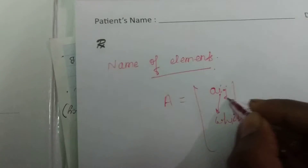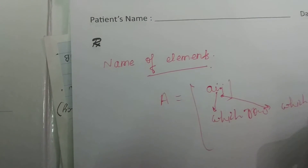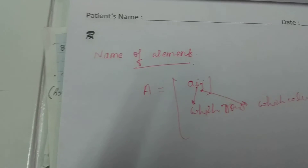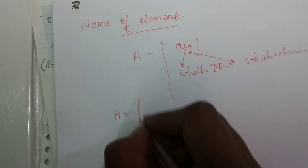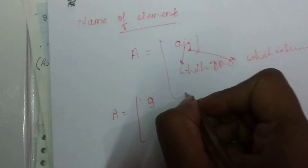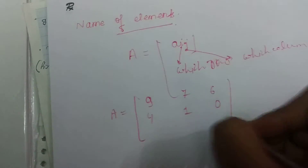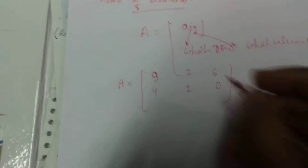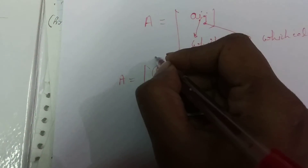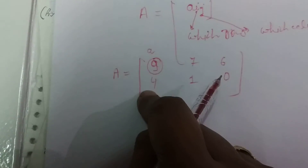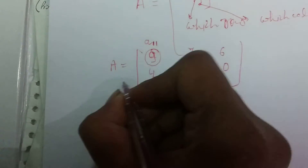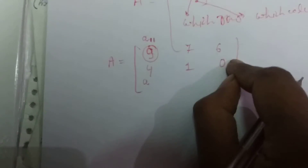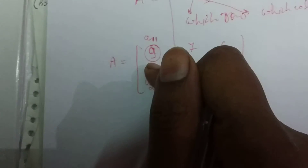Now let's understand which element belongs to which row and which column. Main ek example lekar batati hoon. Jaise mere paas ek simple matrix hai: 9, 7, 6 aur 4, 1, 0. Is matrix mein jo element hai uska naam hota hai — dekho yeh pehli row mein hai aur pehle column mein hai, toh iska naam hoga A 1,1. Agar 4 ki baat karein — yeh 2nd row mein hai aur first column mein hai, toh A 2,1.